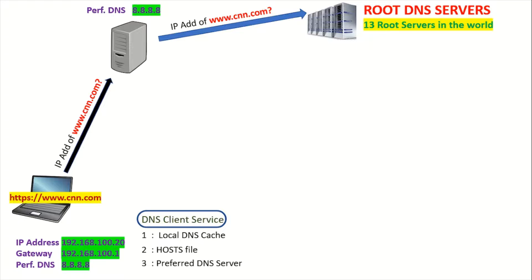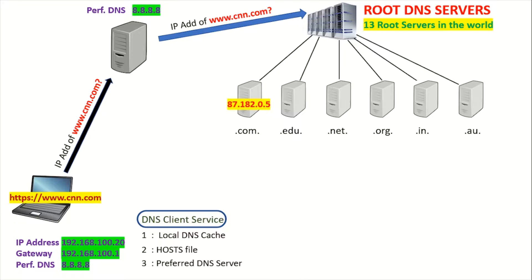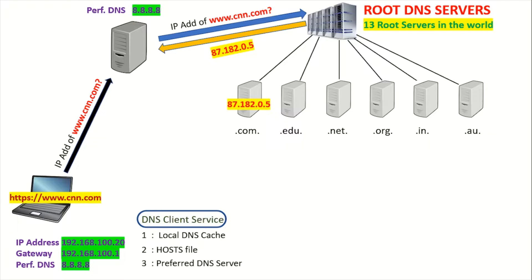The root DNS servers are also not authoritative for cnn.com, but they do know the IP addresses of the top-level domain DNS servers — like .com, .edu, and .net. So what the root DNS servers do is hand over the IP address of the .com DNS server to our preferred DNS server.